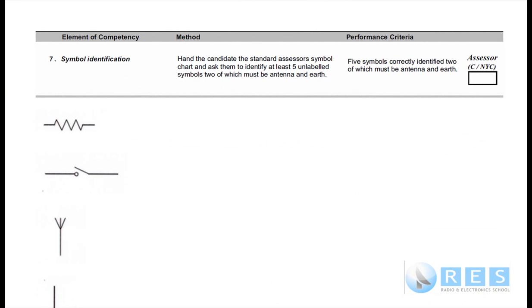Let's look at Competency 7, symbol identification. The method: hand the candidate the standard assessor's symbol chart and ask them to identify at least five unlabeled symbols, two of which must be antenna and earth.